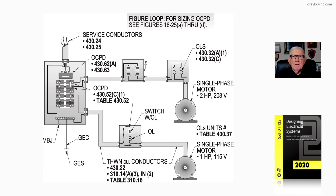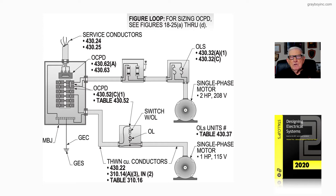Scroll down until you come upon Section 430.22, which is about the second section down from Part 2. Section 430.6A of the code instructs the user — for single-phase motors, for example — to go to Table 430.248 and pick up the single-phase full-load currents of the motor.